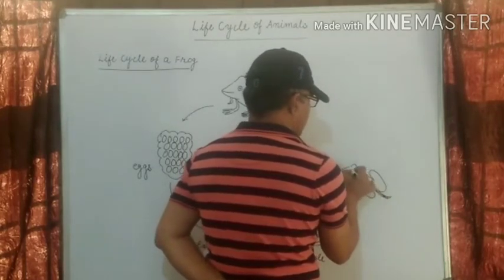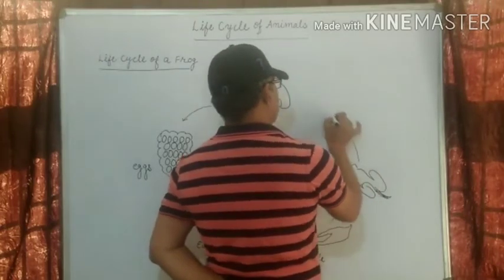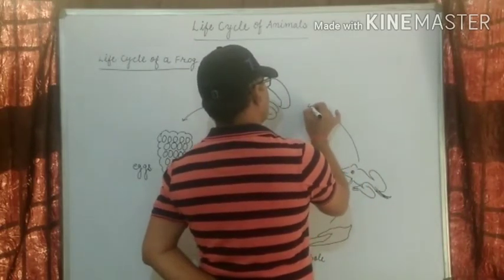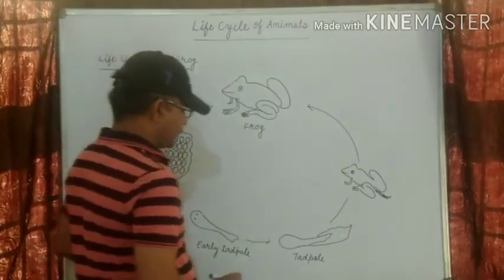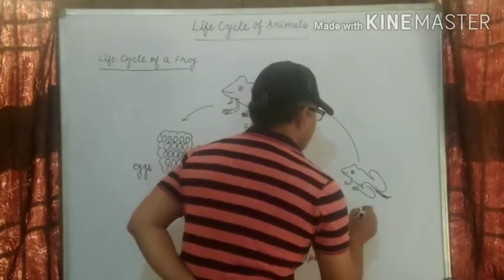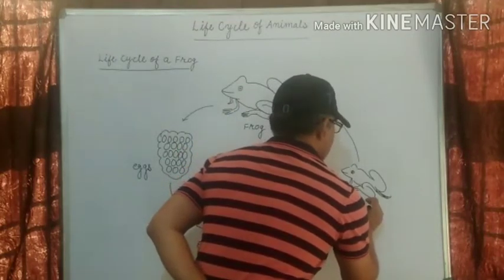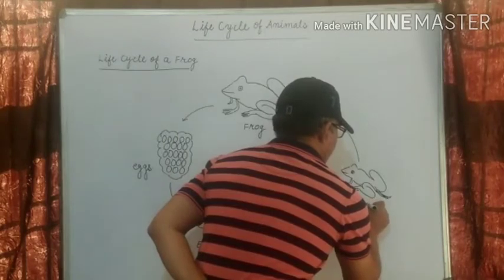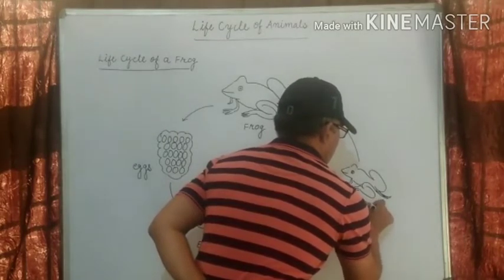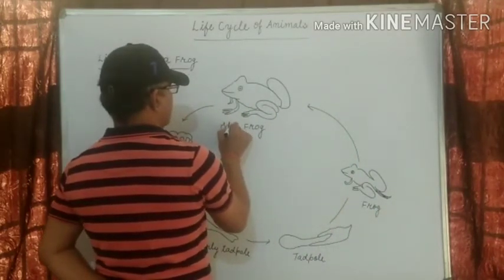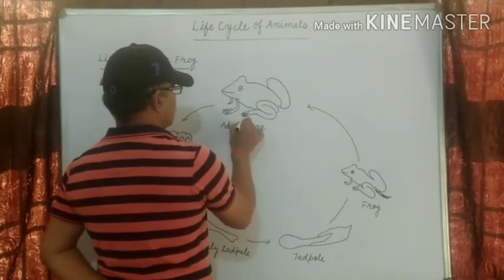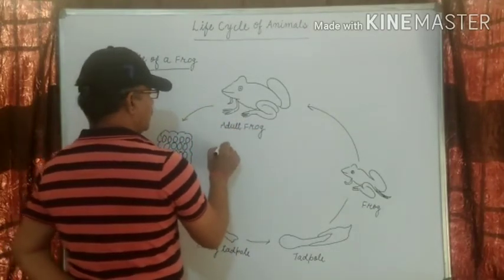It grows into a froglet, then a baby frog, then a frog. This is the life cycle of the frog.